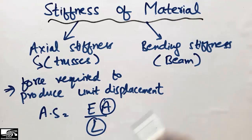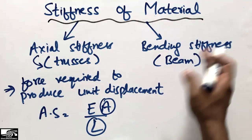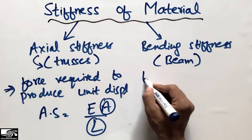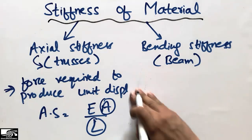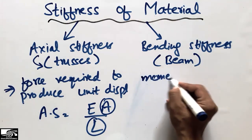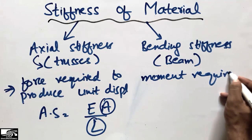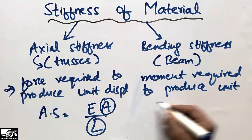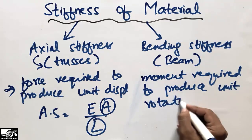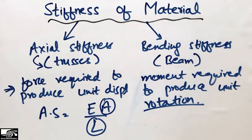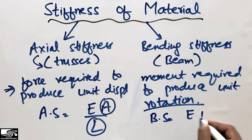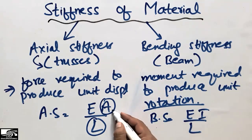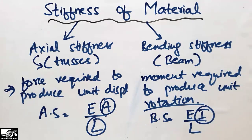For bending stiffness, it is the moment required to produce unit rotation. This type of stiffness is called bending stiffness or flexural stiffness. The bending stiffness is equal to EI divided by L, where I is the moment of inertia, E is the modulus of elasticity, and L is the length of the member.